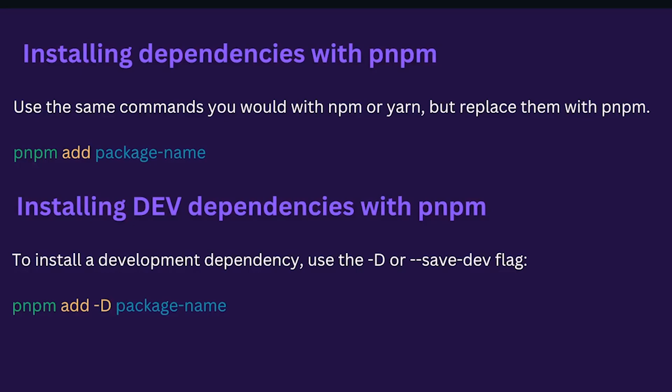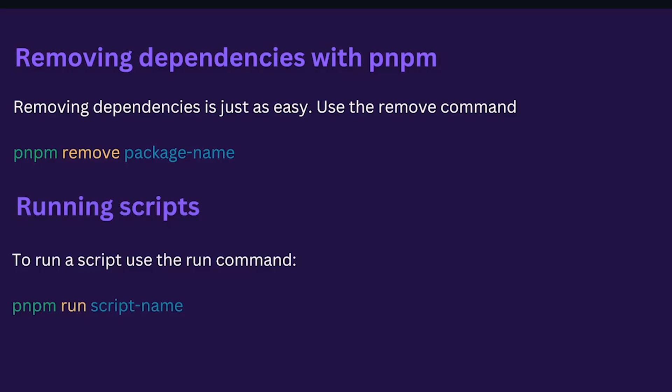Installing dependencies with PNPM: use the same commands you would with npm or yarn but replace them with pnpm. To install a development dependency, use the -D or --save-dev flag. Removing dependencies is just as easy — use the remove command: pnpm remove package-name. To run a script, use the run command: pnpm run script-name.